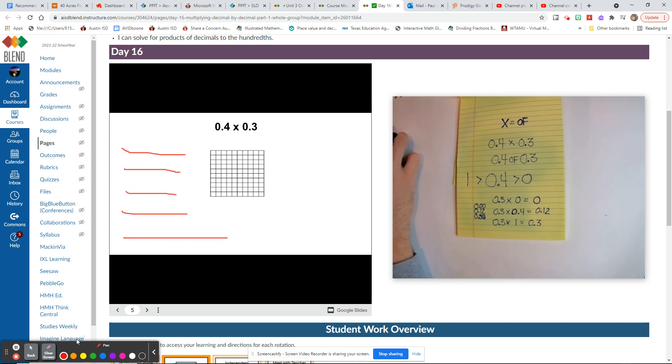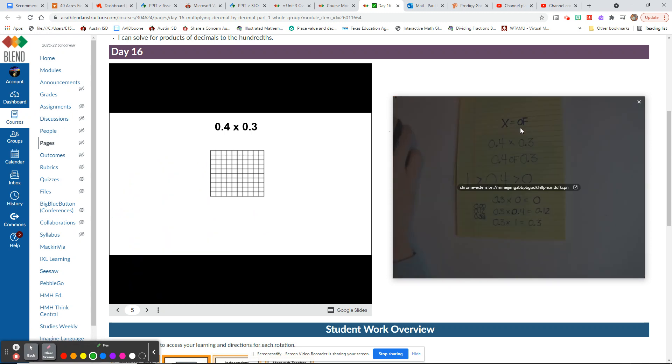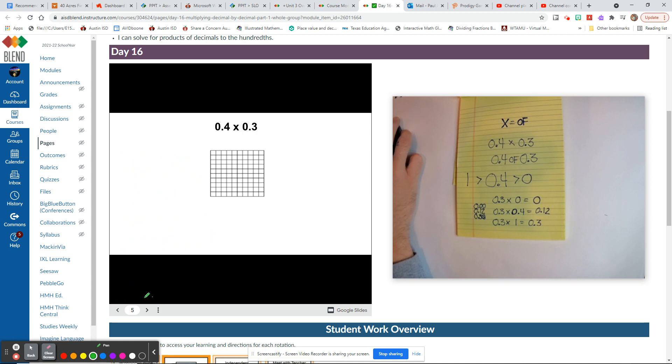and then you have threads that go vertically. This is a terrible representation, but as you can see, they go over, under, over, under, over, under. Just remember, you have ones that go vertically and ones that go horizontally.